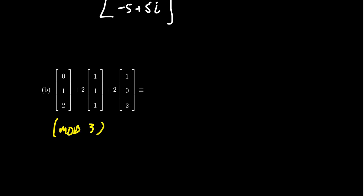So be aware that we're working mod 3 in this situation. Just like the last example, we're going to do all the scalar products first. So we get (0,1,2). We're going to get (2,2,2). And then lastly, we're going to get (2,0,4).